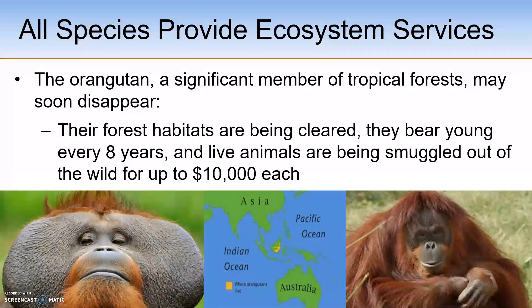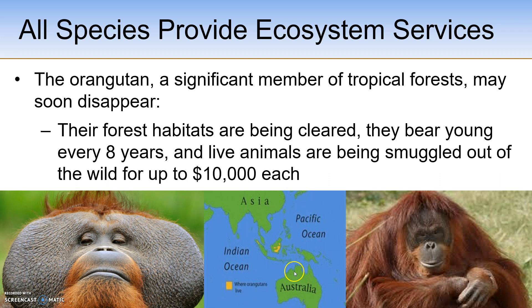Orangutans are definitely one of the most critically endangered of the great apes due to poaching and habitat loss from deforestation and palm oil plantations that are devastating Indonesia. This map depicts where the orangutans live — off the coast of Asia, between Asia and Australia in the Indonesia area.